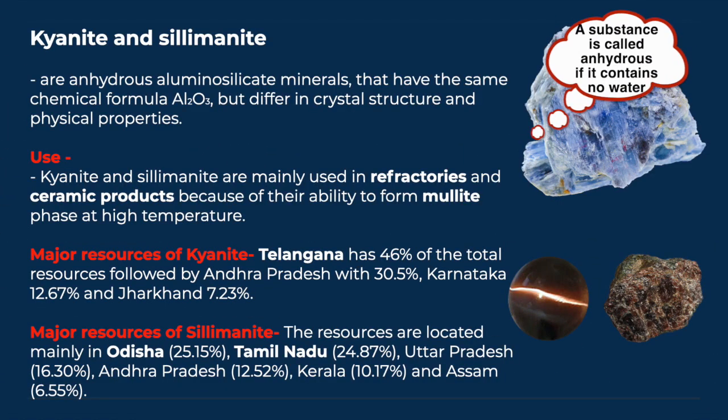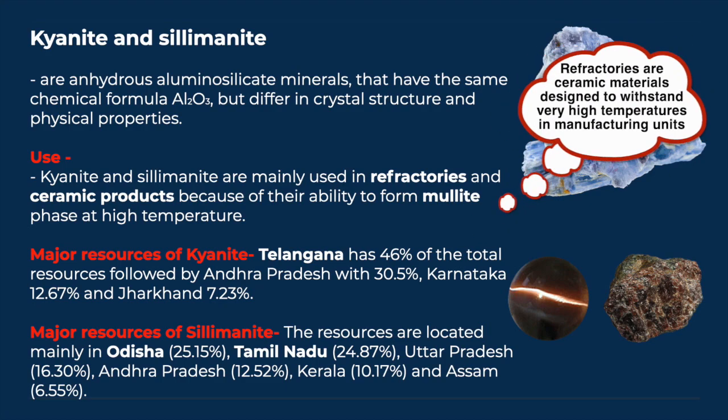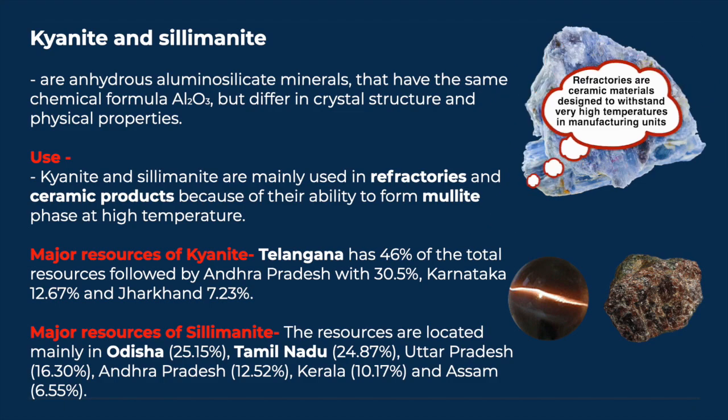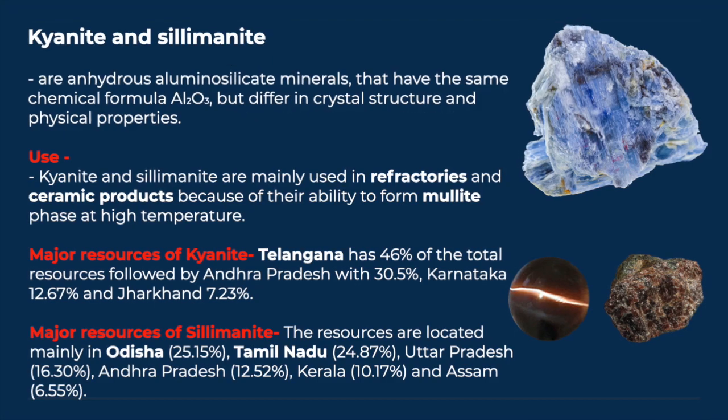Kyanite and Silimanite are anhydrous alumino-silicate minerals that have the same chemical formula Al₂O₃·SiO₂, but differ in crystal structure and physical properties. They are mainly used in refractories and ceramic products because of their ability to form mullite phase at high temperature. Major resources of kyanite are in Telangana and Andhra Pradesh, while silimanite resources are located mainly in Odisha and Tamil Nadu.